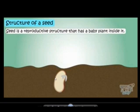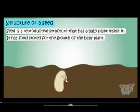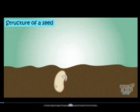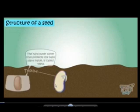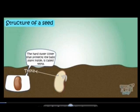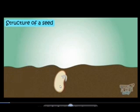A seed is a reproductive structure that has a baby plant inside it. This green color is the baby plant. It has a full food store for the growth of the baby plant. Now look at the parts of the seed. The first outermost covering is called the Testa. It protects the inside parts of the seed.